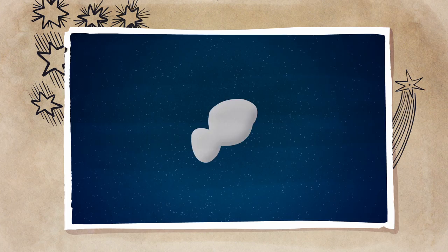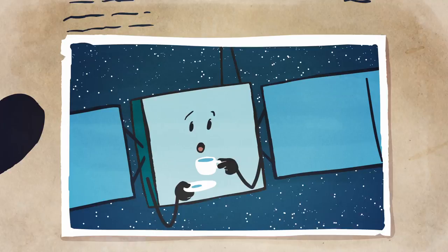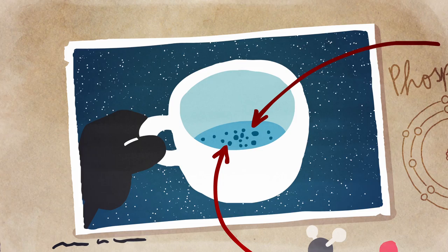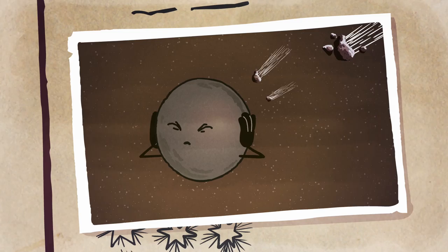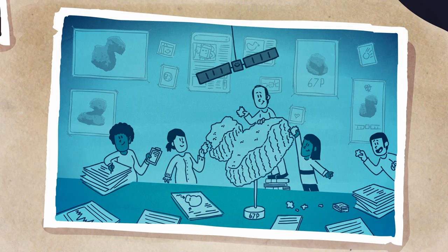Rosetta had made even more remarkable discoveries. She found ingredients that were crucial for the origin of life on Earth. Perhaps comets had helped seed the Earth with these important ingredients when our planet was still very young. Scientists would definitely be busy analyzing Rosetta's findings for decades. Her mission had been a huge success.